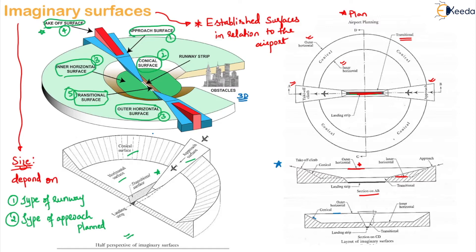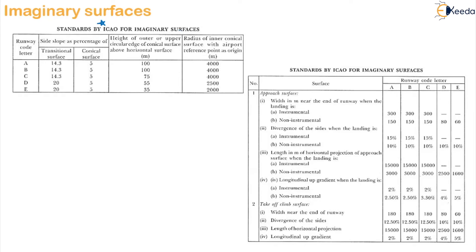Before getting into each surface, there are some standards defined by ICAO for imaginary surfaces. These use runway code letters from A to E. The standards specify the side slope as a percentage for the transitional surface and the conical surface, the height of the outer or upper circular edge of the conical surface above the horizontal surface, and the radius of the inner conical surface with the airport reference point as the origin. A second standard table gives values for the approach surface — specifically the width in meters near the end of the runway for instrumental and non-instrumental landing.